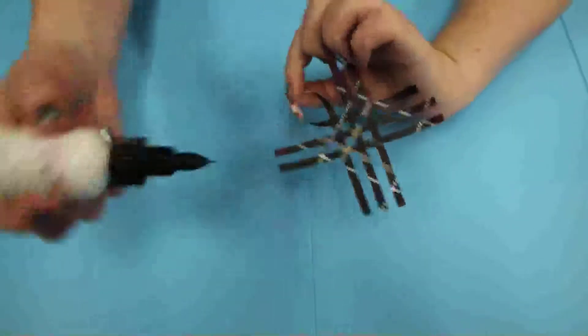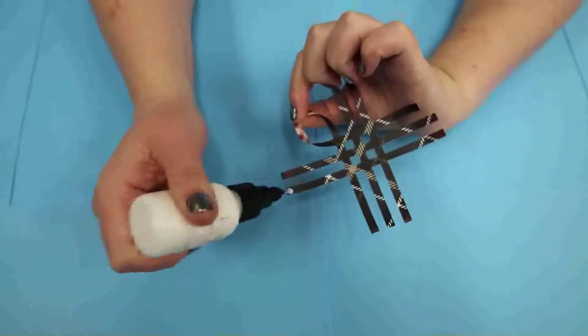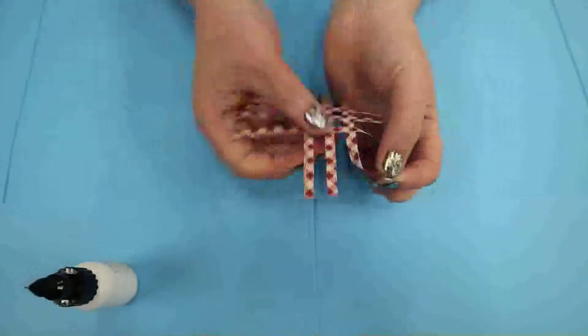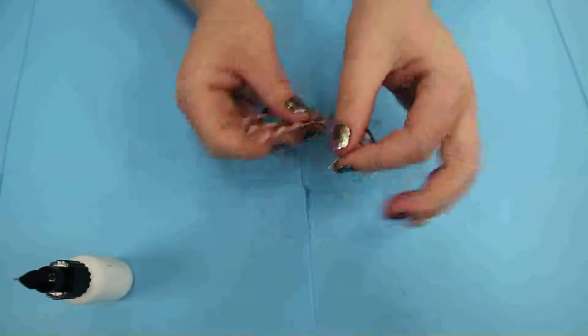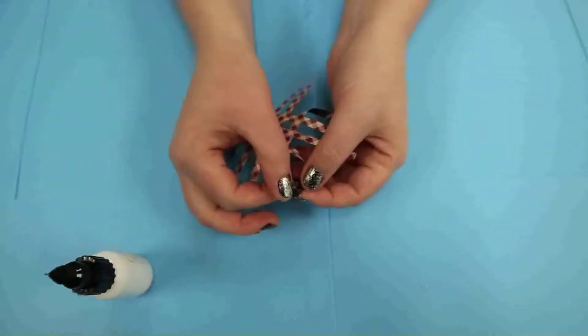And then what I do is because once you get used to this it goes pretty fast. So while you're holding one you can put glue on the other one. And then you're just going to take and you're going to move and you're going to flip both back sides just like that.